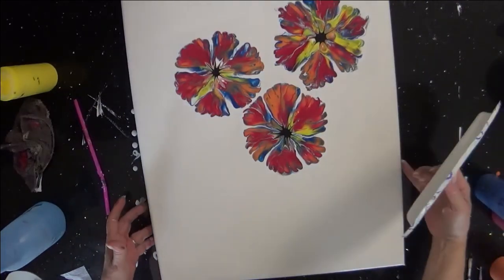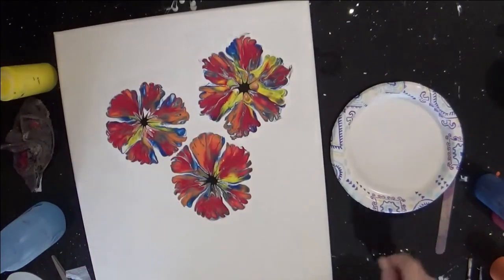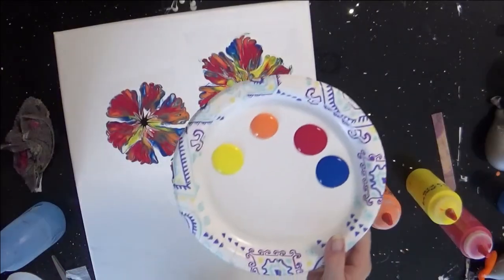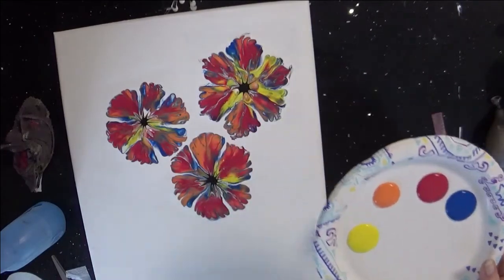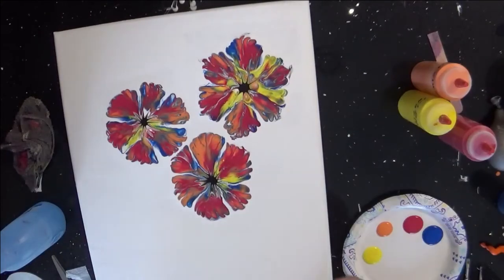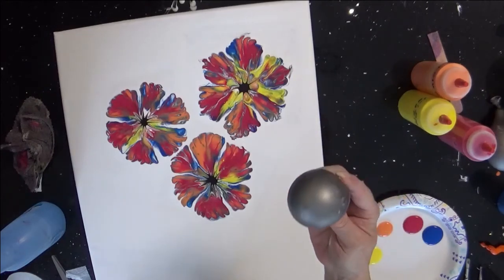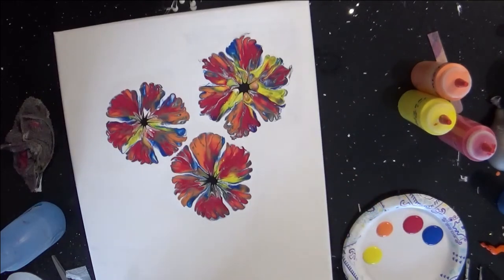We're going to do a balloon kiss and do some smaller flowers in here. I put my colors in a paper plate, yellow, orange, red, and blue. I'm going to use my smaller balloon. It's got a little bit of water in it.